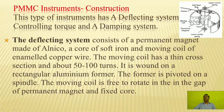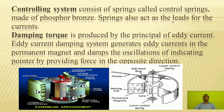This deflecting system consists of a permanent magnet made of alnico, a core of soft iron, and a moving coil of enameled copper wire wound on a rectangular aluminum former, pivoted on a spindle. The controlling system consists of control springs made of phosphor bronze, which also act as leads for the currents. Damping torque is produced by the principle of eddy current. The eddy current damping system generates eddy currents in the aluminum former and damps oscillations of the indicating pointer by providing force in the opposite direction.